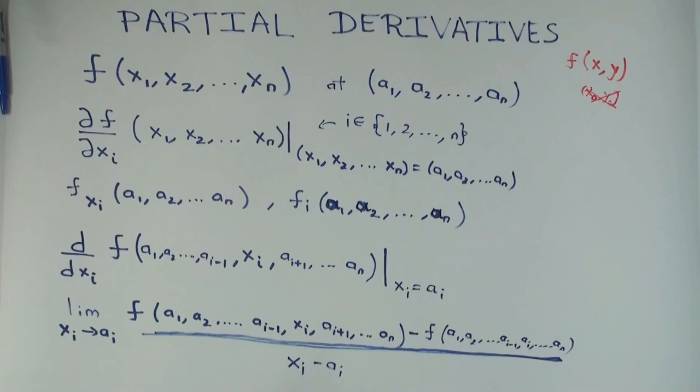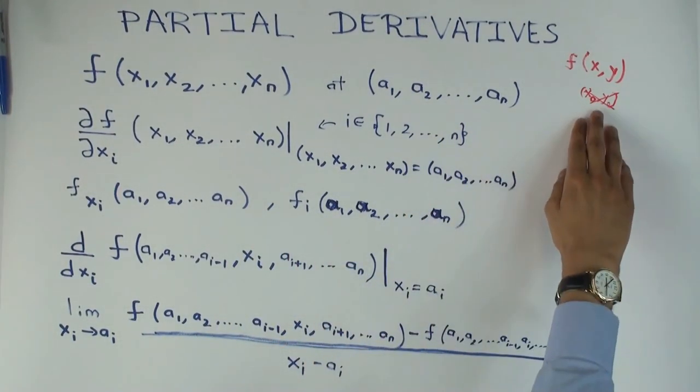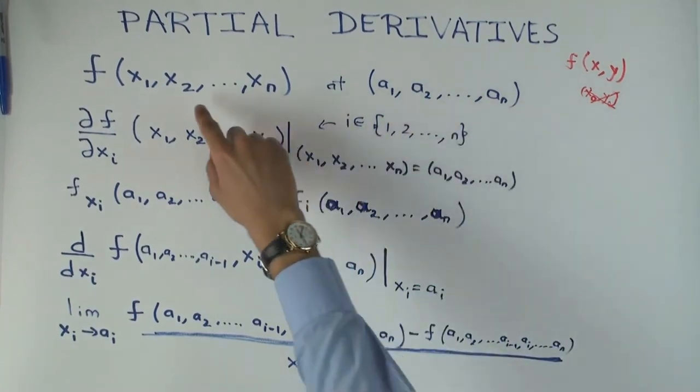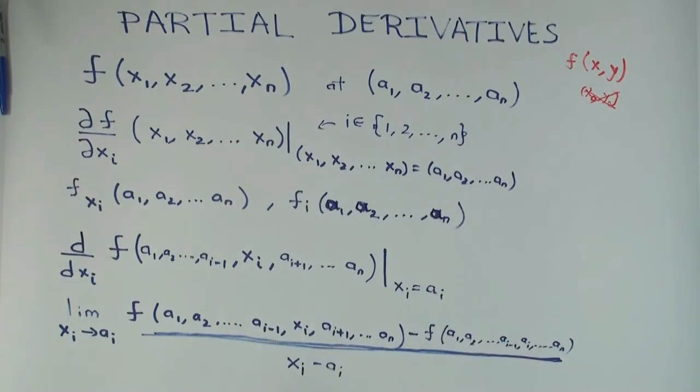So this is the n variable notation. It's a little confusing. I mean, if I wanted, I could use a sub zero notation, but then I would have two subscripts and it would get confused. That's why I use this ai notation. That's why it doesn't quite exactly map to the two variable case.